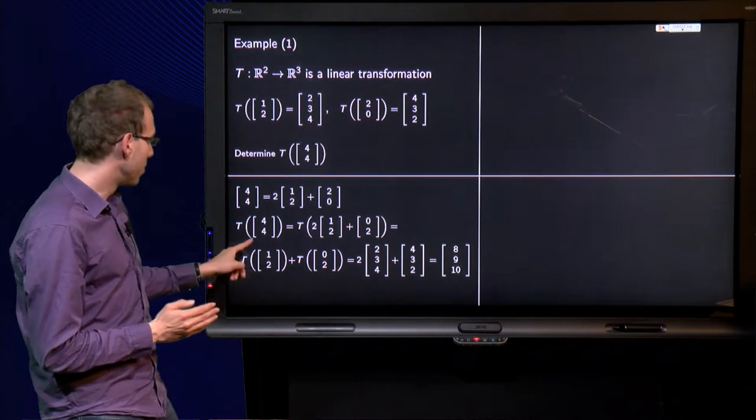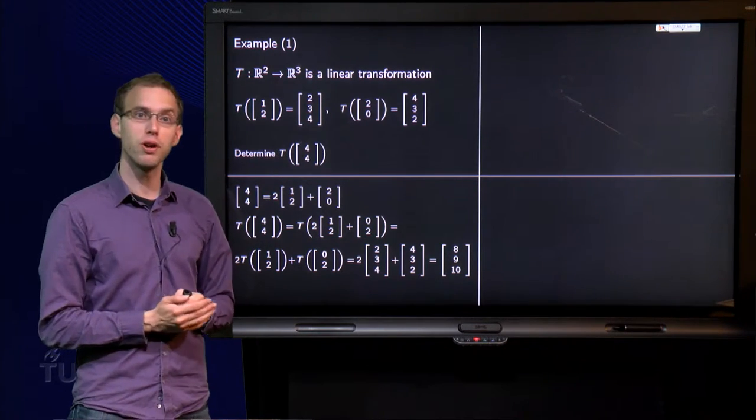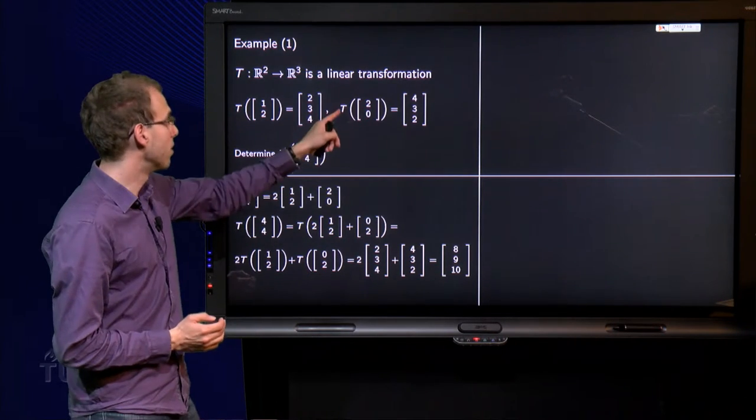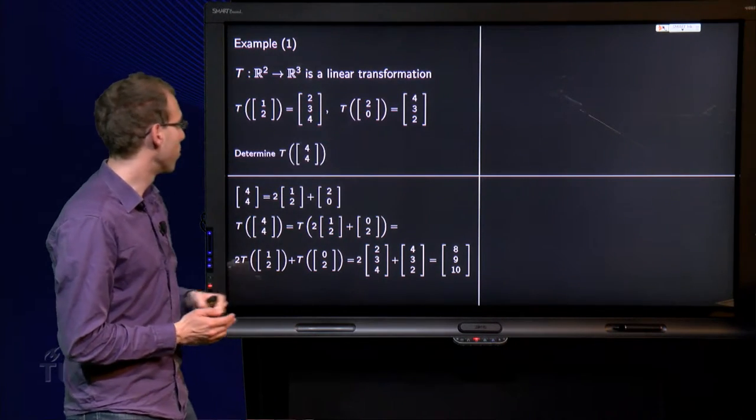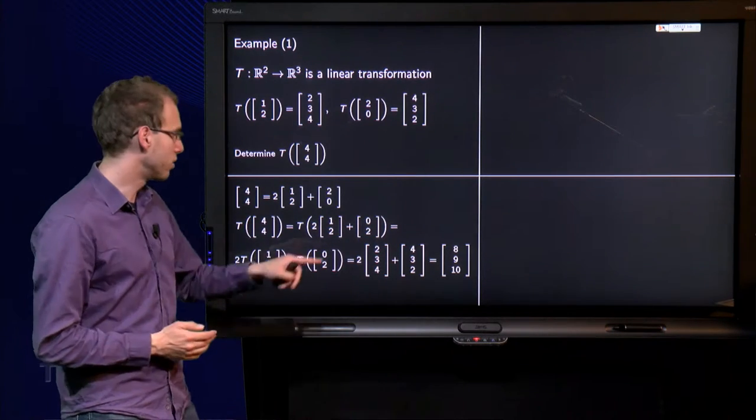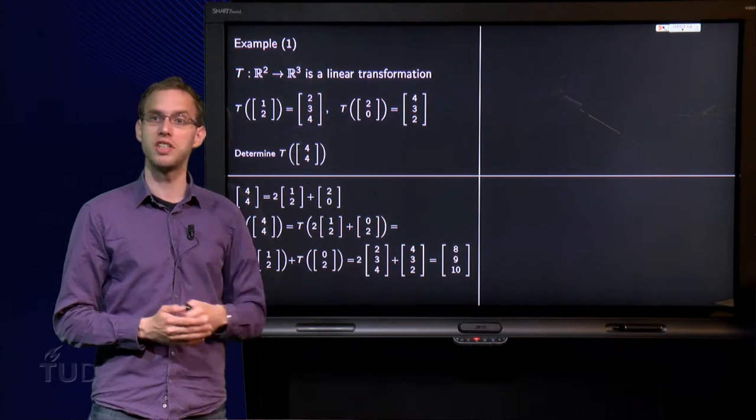Ah, and that helps us because we know the transformation of (1,2). T of (1,2) equals (2,3,4) so we get 2 times (2,3,4). And the image of (2,0) equals (4,3,2). So we get (4,3,2) over here. And we can just add everything up. 4 plus 4 equals 8. 6 plus 3 equals 9. And 8 plus 2 equals 10.